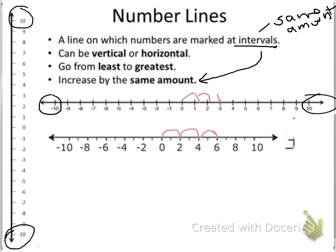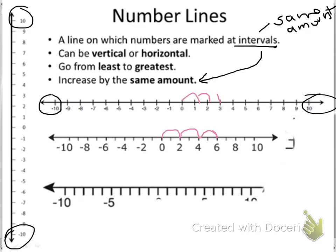Now we can still plot any number, or find any number on this number line. It's just that it increases by two instead of increasing by one. Here we have another example. This number line increases by fives.